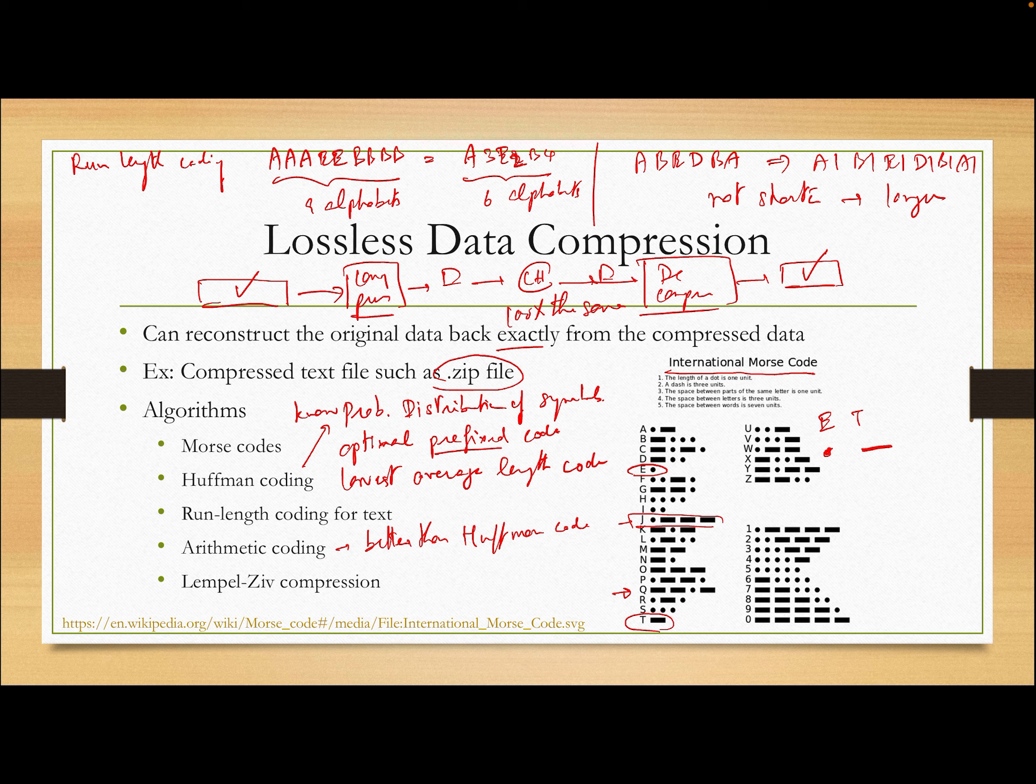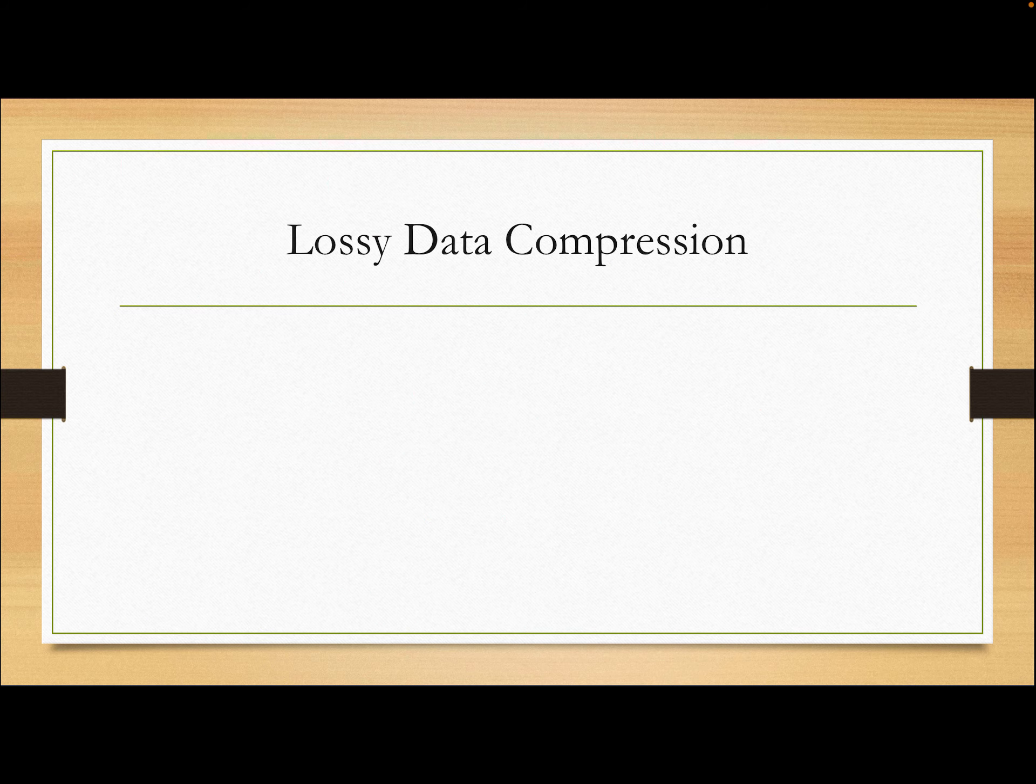The next one is Lempel-Ziv compression. This is for the case that you don't know, you don't need to know probability distribution. So in the case that you don't know probability distribution, you can use Lempel-Ziv. Again, this will not be explained in this class, but you can use this keyword to search for Lempel-Ziv. It's used dictionary-based encoding. So it doesn't need probability distribution of the symbols.